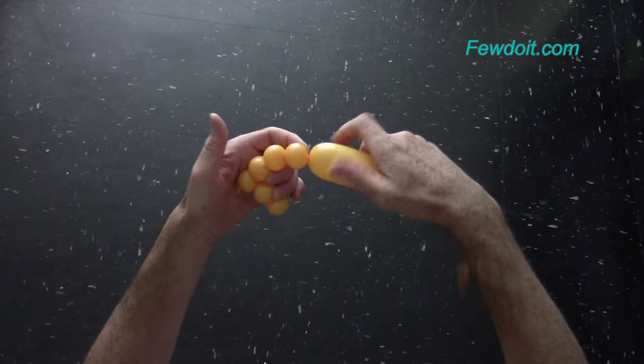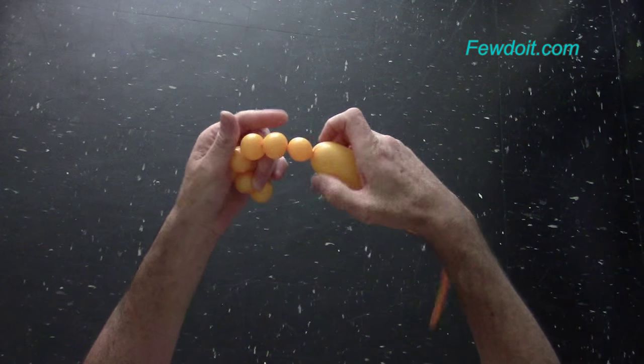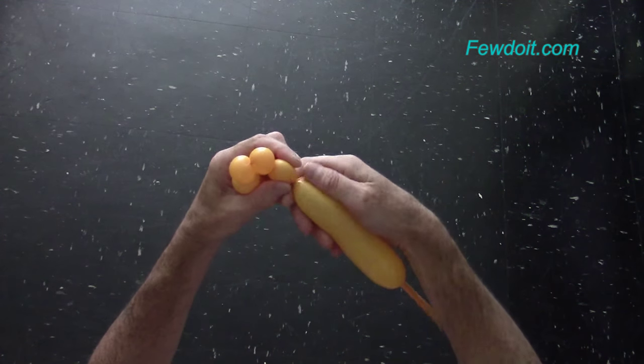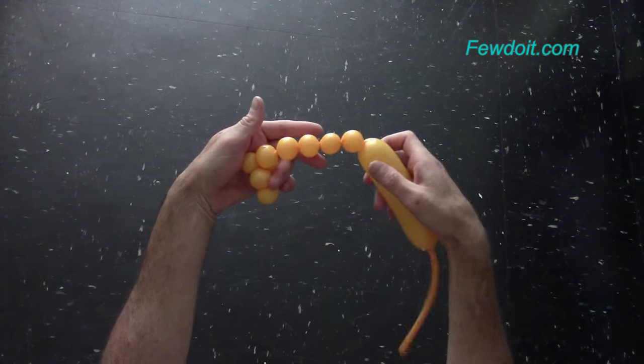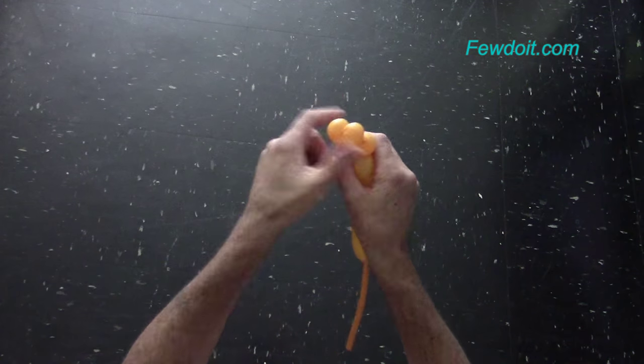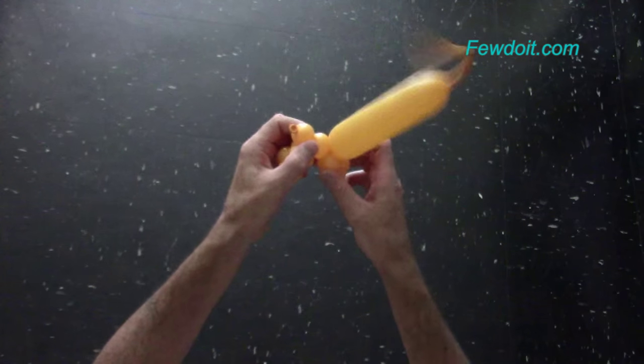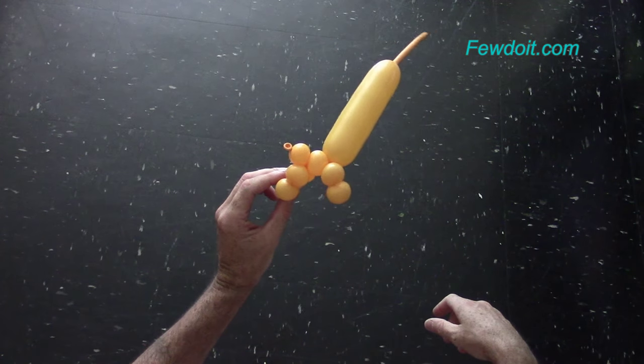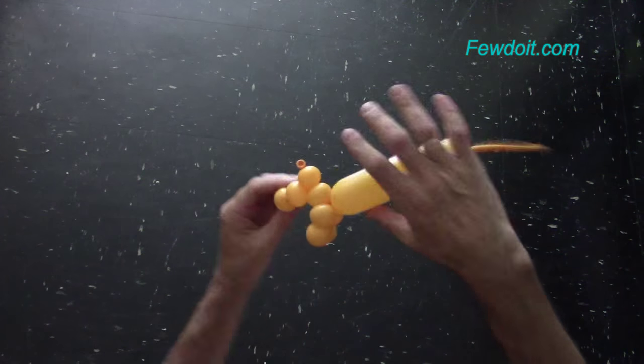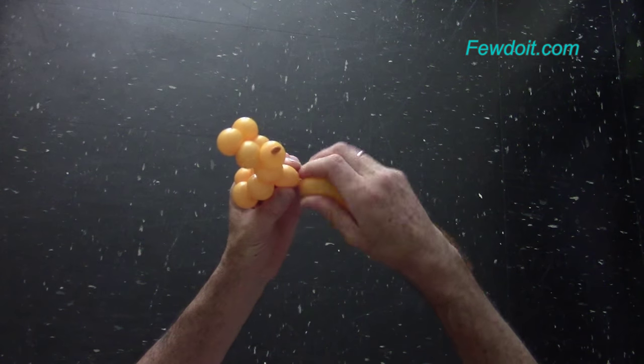Now we have to twist a chain of the next 5 bubbles. And then we have to lock both ends of the chain of the last 4 bubbles in one lock twist. We have made the body and the front legs of the first dog. At this point it looks like a baby giraffe. Link to this instruction you can find on my website fewdoit.com.